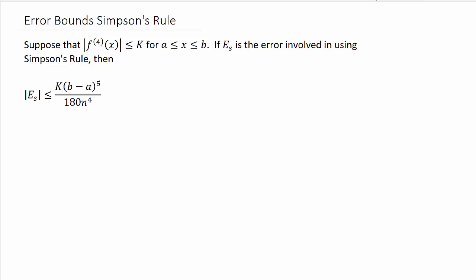Alright, so this one we're going to look at error bounds using Simpson's rule. For Simpson's rule, suppose that the fourth derivative of f(x) is less than or equal to k, where x is between a and b. If E_s is the error involved in using Simpson's rule, then the absolute value of E_s is less than or equal to k times (b-a)^5 over 180n^4.